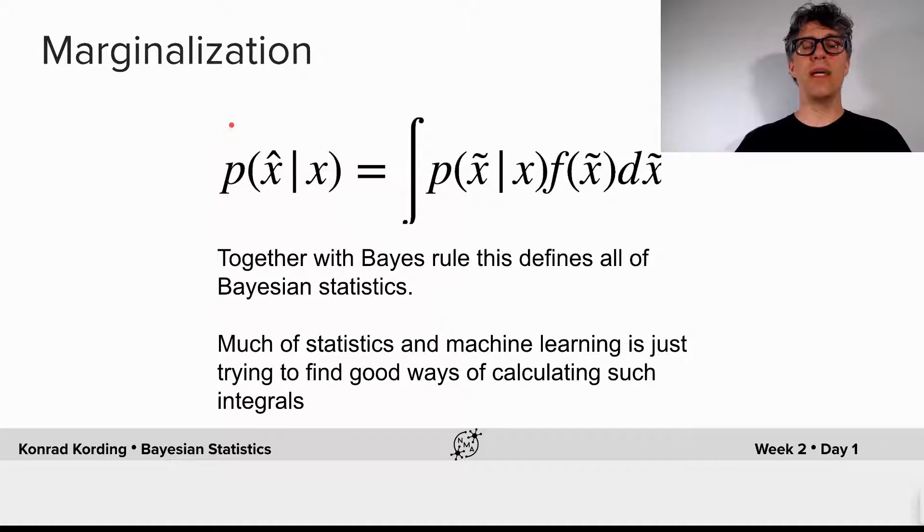Now we're set up for marginalization. The probability of x hat, which is the response distribution given x, which is the stimulus, both of these are entities that we know, is the integral of all possible x tilde given the actual stimulus x, times the response function, which is the deterministic function of x tilde, and we need to integrate out x tilde.